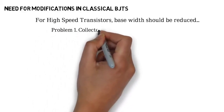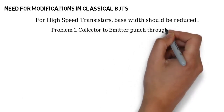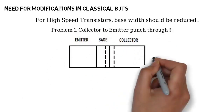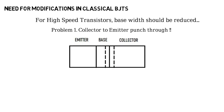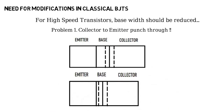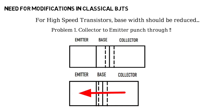The first problem is collector-to-emitter punch-through. This is the classical bipolar junction transistor: emitter, base, collector. The dotted line represents the depletion layer at the base-collector junction. So when you reduce the width of base, look at the figure — most of the depletion layer is towards the base, and the base is fully covered with the depletion layer. So there is a chance for collector-to-emitter punch-through voltage.